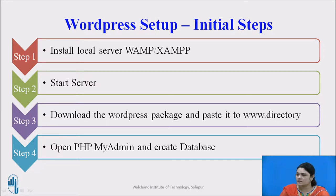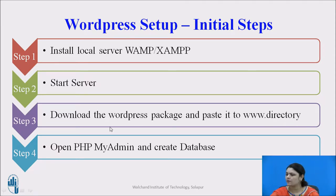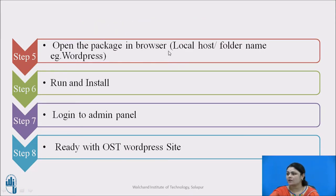Here are some important steps you need to perform during WordPress setup — an analytical flow of installation. Step 1 is to install your local server, WAMP or XAMPP server. Step 2, make sure you start your server. Step 3, download your WordPress package and paste it in the www directory, that is the web root directory. Step 4, open phpMyAdmin and create a database. Step 5, open the package in your browser using localhost slash folder name — for example, localhost slash WordPress. Then run and install, and log in to your admin panel. Now we are ready with our WordPress site.